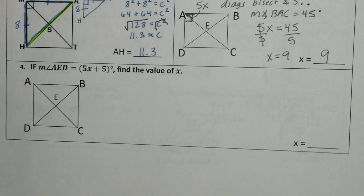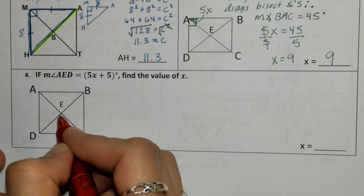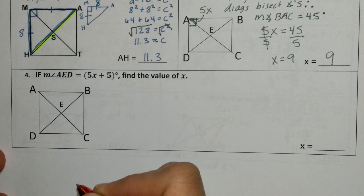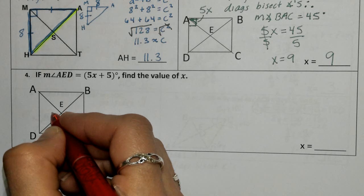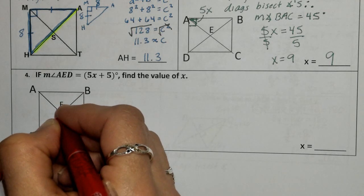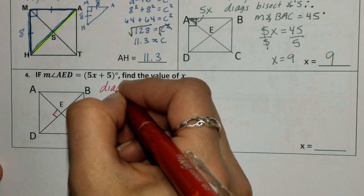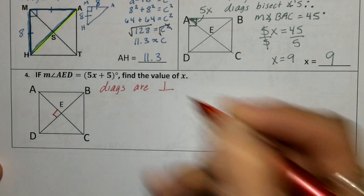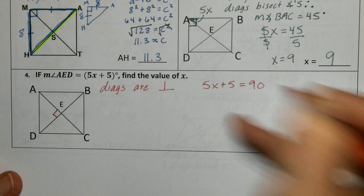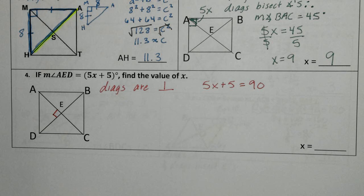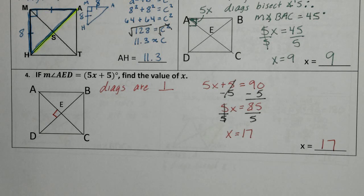Last problem: the measurement of angle AED is 5X plus 5. With the rhombus property that transfers to the square, the diagonals are perpendicular — so we set 5X plus 5 equal to 90. Pause it, solve it. You should come out with X equals 17. And that is it for your rhombus and square properties.